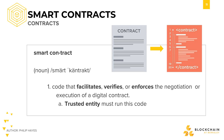Now that we know what a contract is, the question is: what makes a smart contract so smart? A smart contract is a piece of code that facilitates, verifies, or enforces the negotiation or execution of a digital contract. For us to reach consensus, a trusted entity must run this code. After all, we need to trust that a digital contract is enforced correctly.